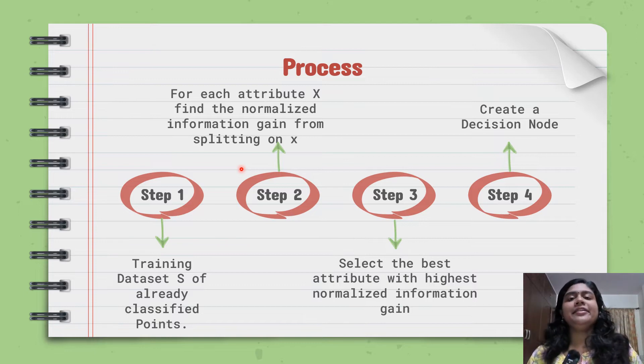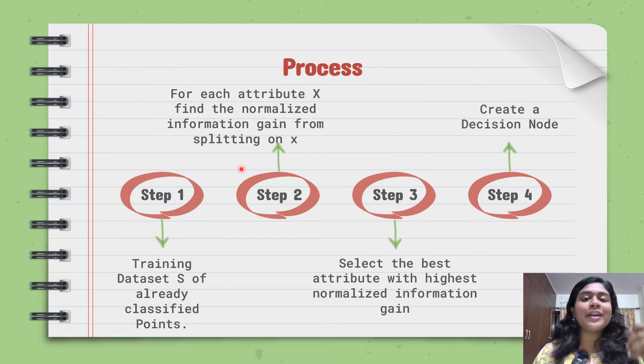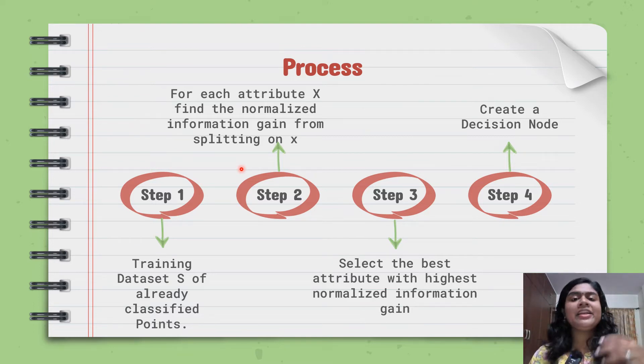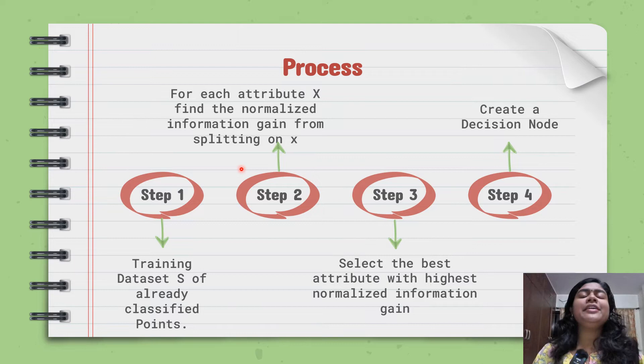So here is the difference between ID3 and C4.5. In ID3, we were splitting on entropy or information gain. But over here, we are going to split according to the normalized information gain. Now this has a lot of benefits because whenever we have many attributes which are measured in different units. For example, the blood pressure is measured in different units.